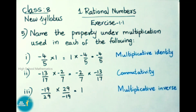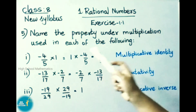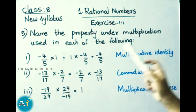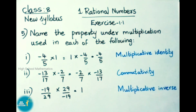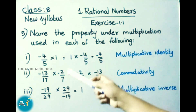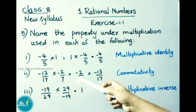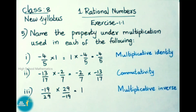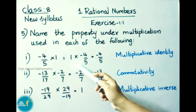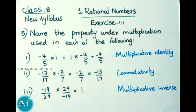See the fifth sum now: Name the property under multiplication used in each of the following. First one: -4/5 × 1 = 1 × -4/5 = -4/5. Here 1 is the multiplicative identity, so the property used here is multiplicative identity.